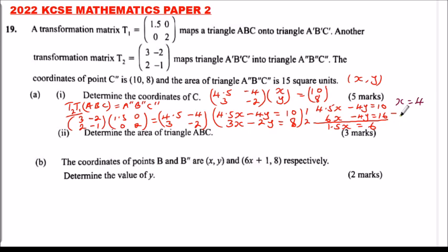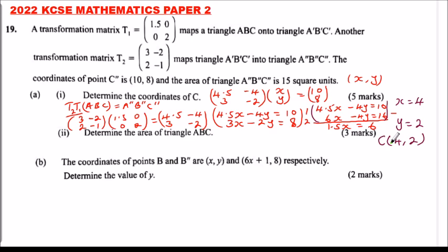When x = 4, substitute into one of the equations to find y = 2. Verification: 3 times 4 is 12, minus 2 times 2 is 4, gives 8 — which satisfies the equation. And 6 times 4 is 24 minus 8 gives 16 — also satisfied. So the coordinates of C are (4, 2).